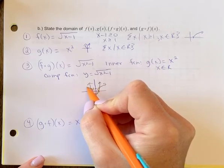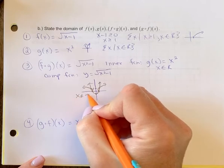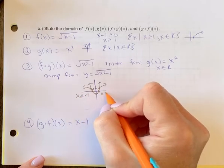Remember, it kind of bubbles out. So your restrictions would be x is less than or equal to negative 1, and x is greater than or equal to 1.